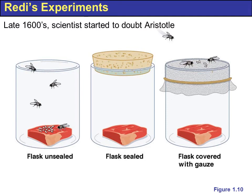The second flask was sealed and also had meat in it. The third flask had a gauze cover, so air could get in. In the sealed flask, nothing grew — no flies spontaneously appeared. In the gauze-covered flask, flies did not spontaneously appear inside the flask but did grow on the gauze.